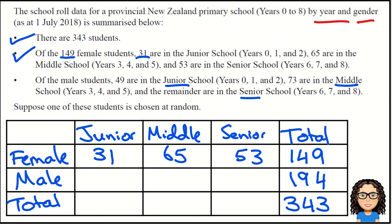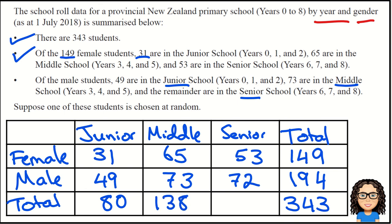That deals with the female data. The next bullet point says of the male students — we know we've got 194 — 49 are in junior school, 73 are in middle, and the remainder in senior. So 194 minus 73 minus 49 gives me 72 students in senior. Then I can add up my totals: 31 plus 49 gives 80 junior students, middle school total is 138, and senior students total 125.